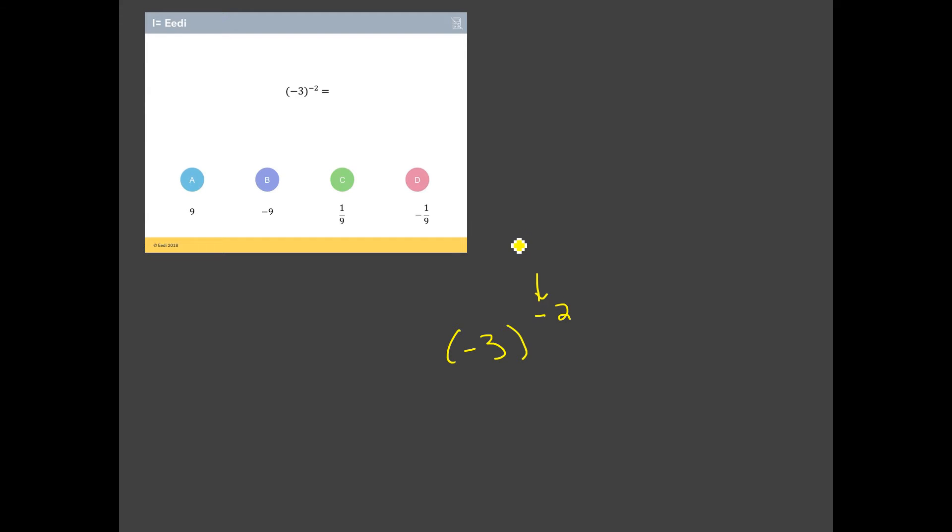Let's start with the one in the power. If you have a negative in a power, it means one thing and one thing only. It means you need to take the reciprocal or find the reciprocal. It's like a code word.